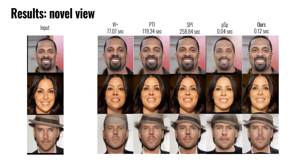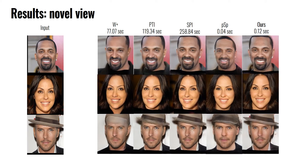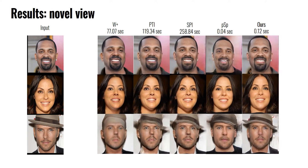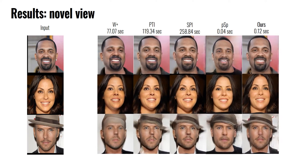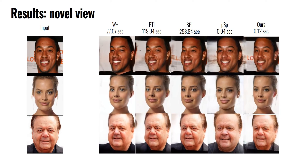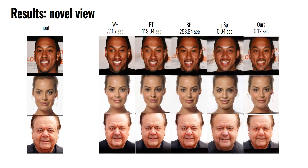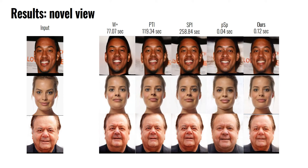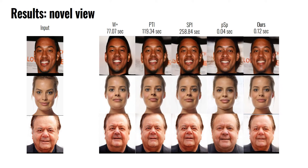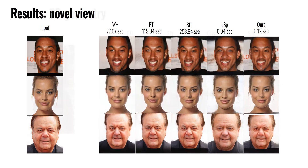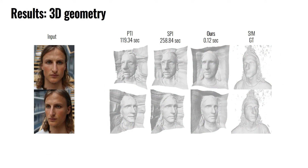For novel view rendering, our method preserves identity and multi-view consistency. Our method embeds the head in 3D space better than all other approaches, as indicated by the depth metric in the paper. Our inversion framework also allows for extracting accurate 3D meshes by marching cubes from the EG3D implicit representation.